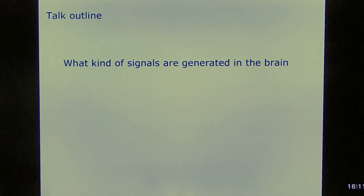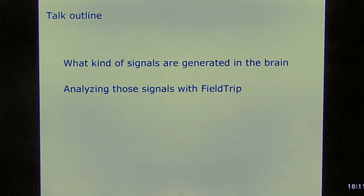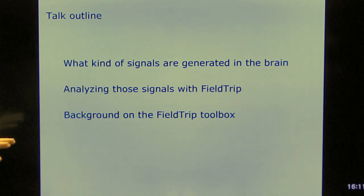The outline of the talk is that I will very shortly touch upon the type of signals that are generated in the brain. Of course that has been explained by Mati, so I'm not going to repeat that. I just want to stress those aspects which are relevant in the analysis. Subsequently I will tell how we analyze those signals in FieldTrip. And at the end I will use two or three slides on the background of the FieldTrip project, so that you have a little bit of an idea of how the whole thing is organized.